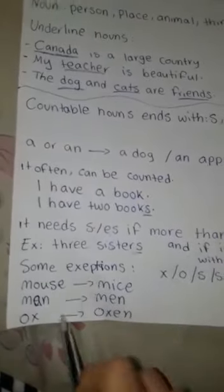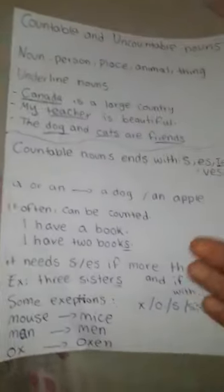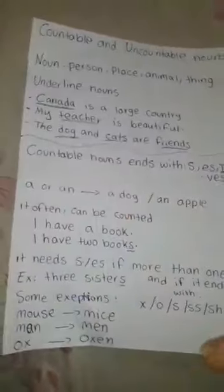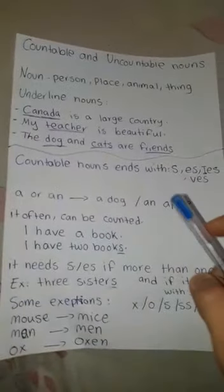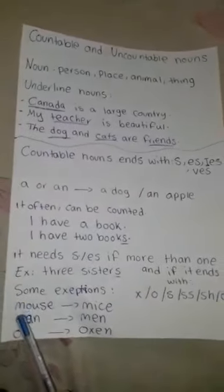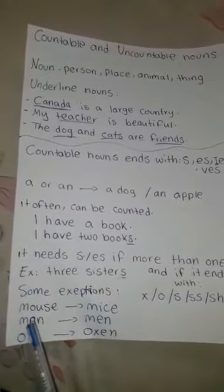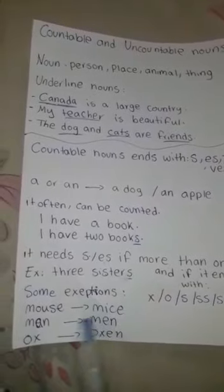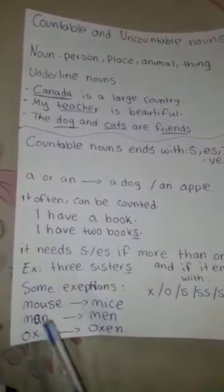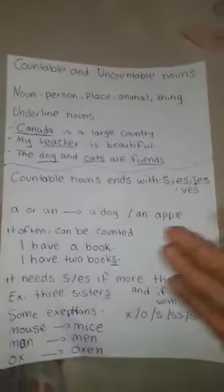Now, some exceptions. Some nouns don't follow rules. Like mouse becomes mice, man becomes men, and ox becomes oxen.